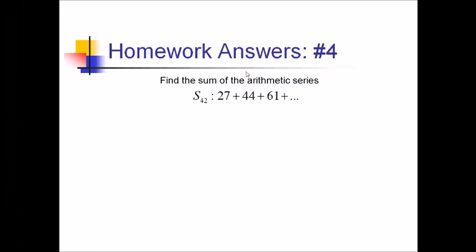For number 4, we want the sum of this arithmetic series. So let's start with our formula, n times T1 plus Tn over 2. We've got T1, that's 27. N is 42. But we don't know Tn. We don't know the 42nd term. So I'm going to use my arithmetic sequence formula.